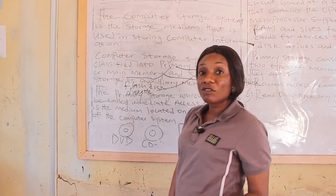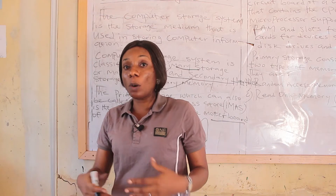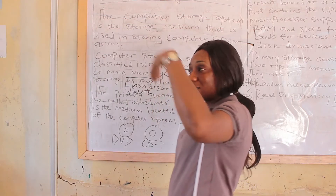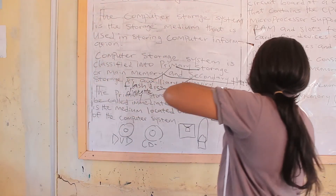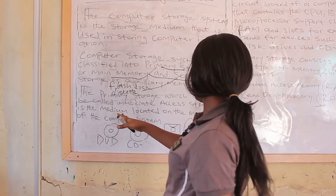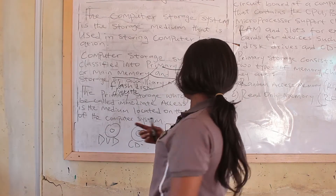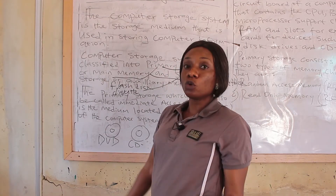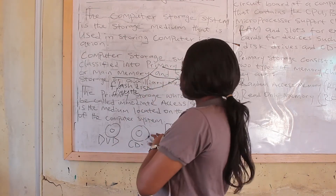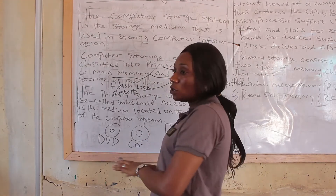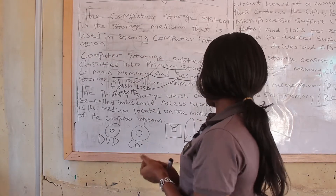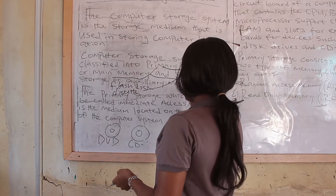In case you want to travel and don't feel like taking your laptop or computer, you go with your secondary storage device and you will be able to access the information through another system. The primary storage device is called the immediate access store because you store your information immediately and you also access it immediately — you don't need to go get your secondary storage device from outside to access your information.